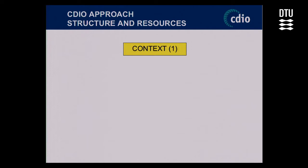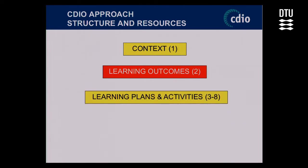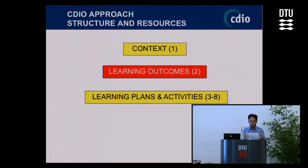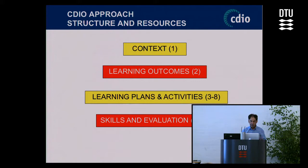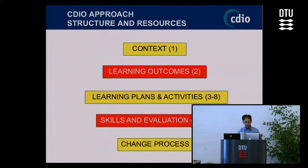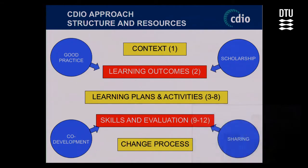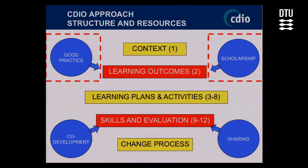I don't think I've shown you this slide today. The first standard is context, the second is learning outcomes, the next standard is learning plans and activities, standards three to eight are skills and evaluation, standards nine to twelve are the change process. We're helping you with the change process, including good practice, scholarship, sharing, and co-development.